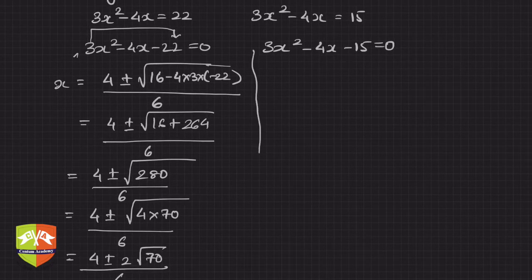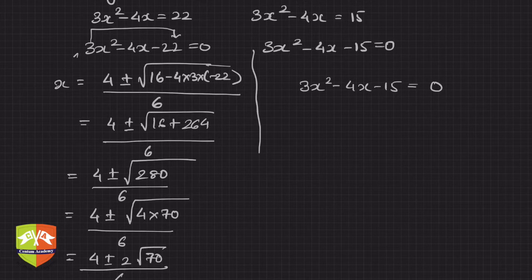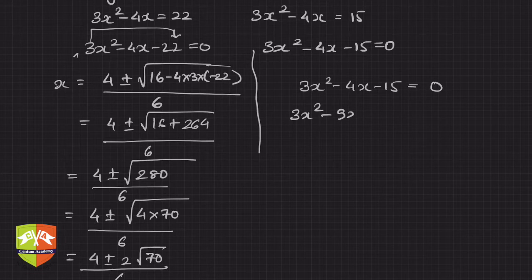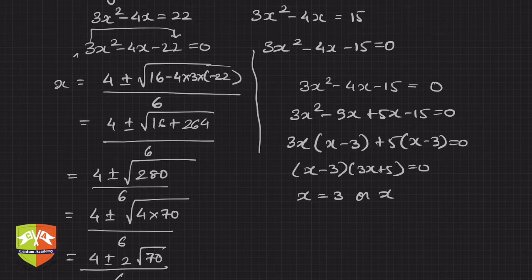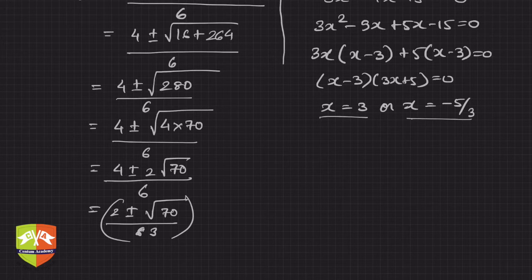For the second equation, 3x² − 4x − 15 = 0: we note 3 × 15 = 45 = 9 × 5. We split the middle term: 3x² − 9x + 5x − 15 = 0. Taking 3x common: 3x(x − 3) + 5(x − 3) = 0, so (x − 3)(3x + 5) = 0. Therefore x = 3 or x = −5/3.